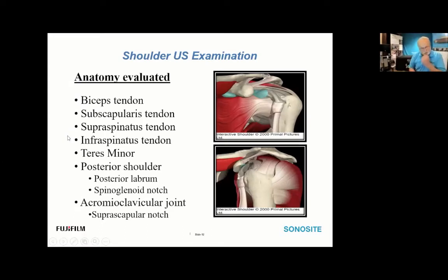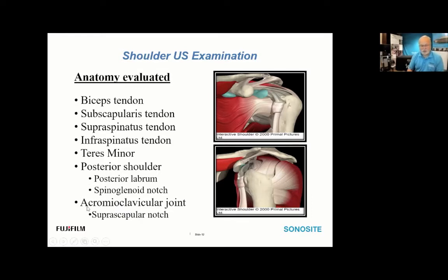The anatomy covered in a shoulder ultrasound examination includes the bicep tendon — specifically the long head of the bicep tendon — the subscapularis, the supraspinatus and infraspinatus tendons, a look at the teres minor, the posterior shoulder including the posterior labrum, the all-important spinal glenoid notch, the AC joint for gapping and degenerative change, and the suprascapular notch as needed.